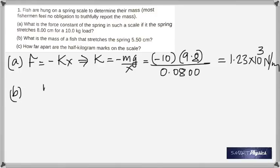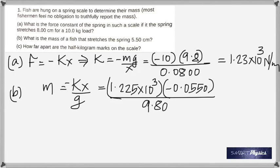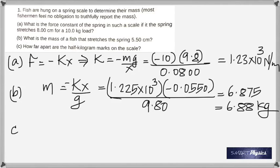Part B says: what is the mass of a fish that stretches the spring 5.50 centimeters? Now you need to find the mass. Since you already have K, just rearrange to find the mass. It is 1.225 times 10 to the 3, which is what you get before rounding off.